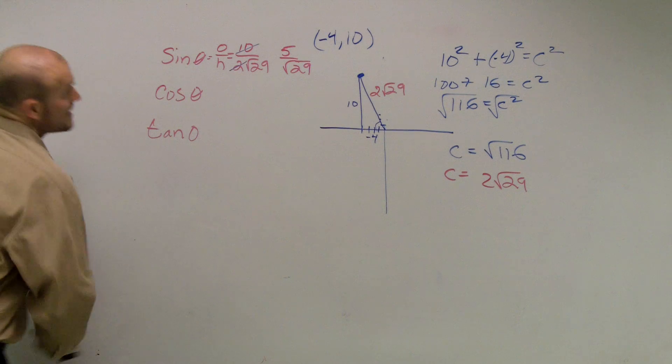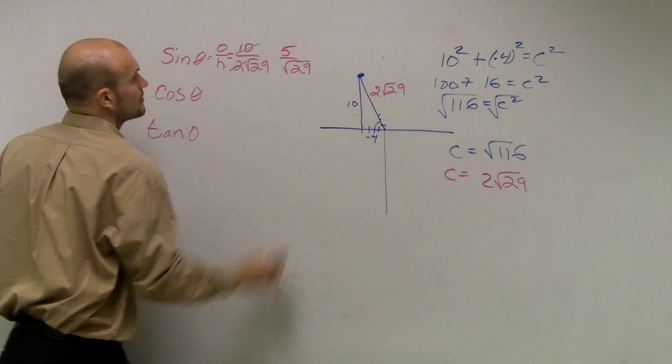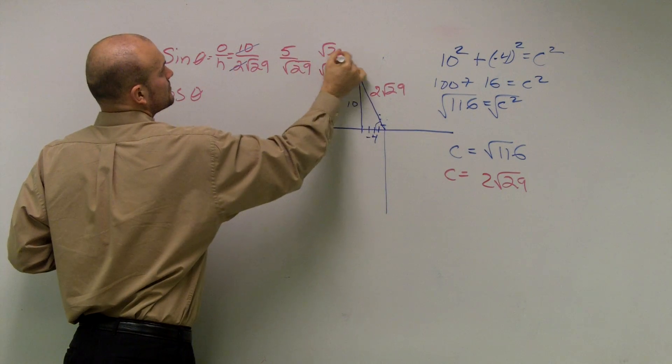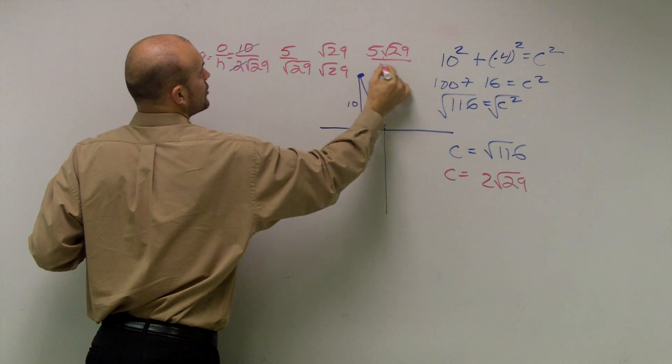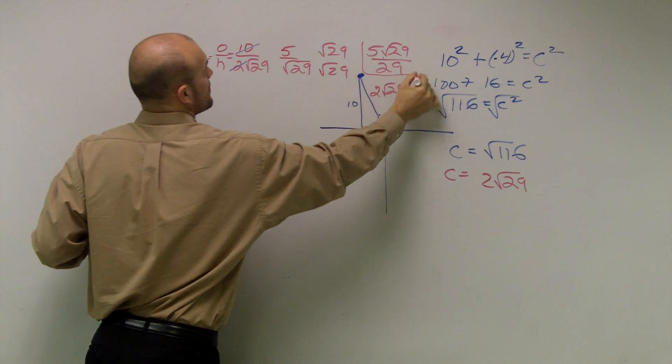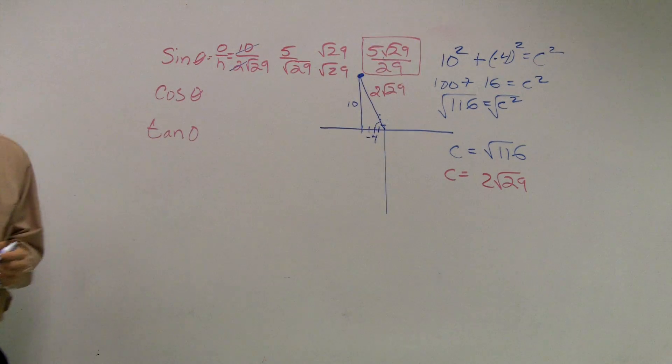Then if I rationalize the denominator by multiplying the 29 on top and the bottom, my final answer is 5 square root of 29 all over 29. So that's how you find the sine of theta.